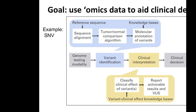This slide shows an example of how single nucleotide variants can be used to help clinical decisions. We profile the genome and identify all variants — aligning sequence to the human genome assembly, finding differences between tumor and normal tissue, and doing molecular annotation. These variants are our potential biomarkers, but then the question is: what is going to be the clinical use?